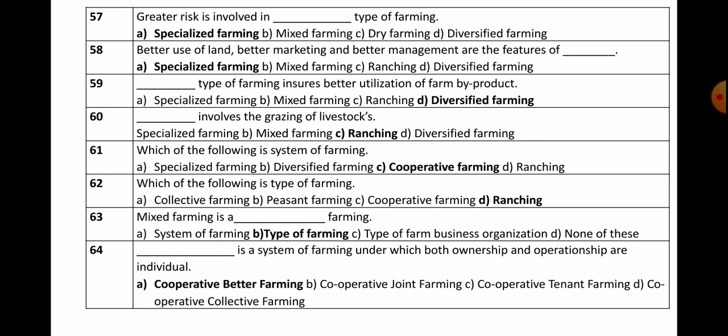Question number 62: Which of the following is a type of farming? Options: collective farming, peasant farming, cooperative farming, or ranching. The correct answer is ranching — ranching is a type of farming. Collective, peasant, and cooperative farming are all systems of farming.